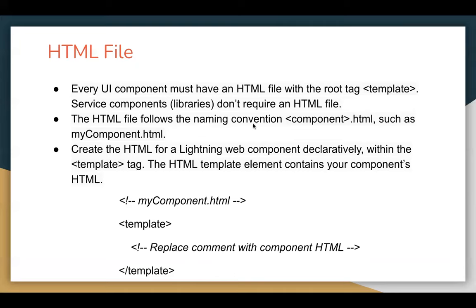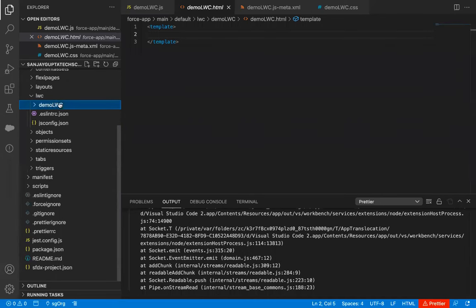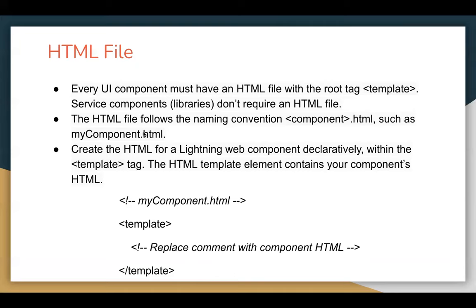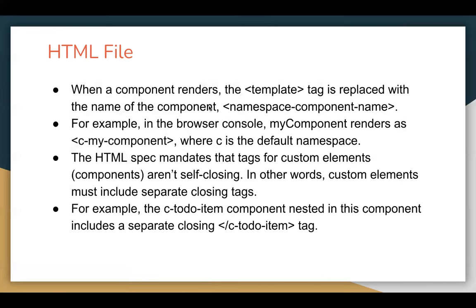The HTML file follows the naming convention: component name dot HTML. In this case, the component name is demo LWC so the HTML file is demoLWC.html. Another example: myComponent.html. You create the HTML for a lightning web component declaratively within the template tag. The HTML template element contains your component's HTML, and inside the template tag you can write your component's HTML.